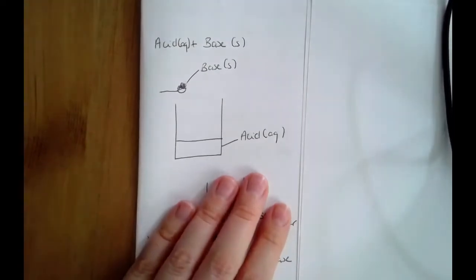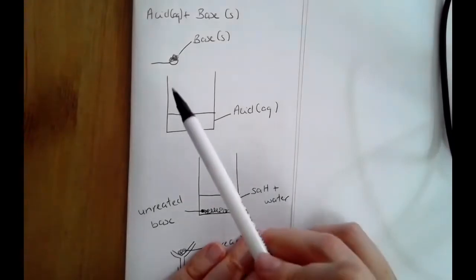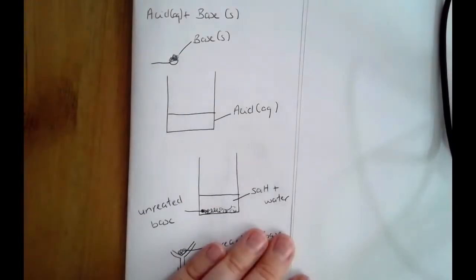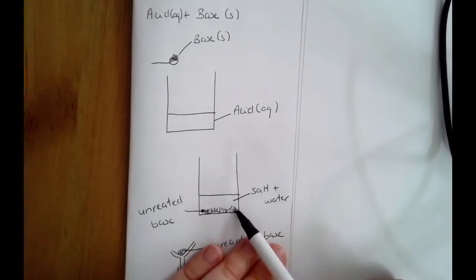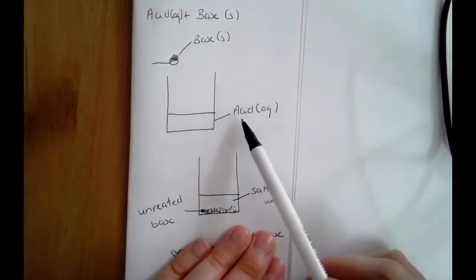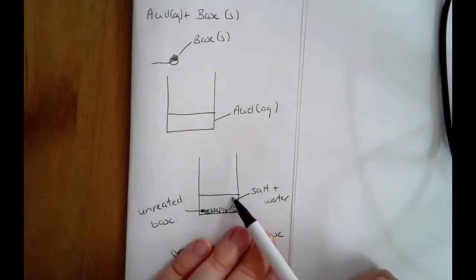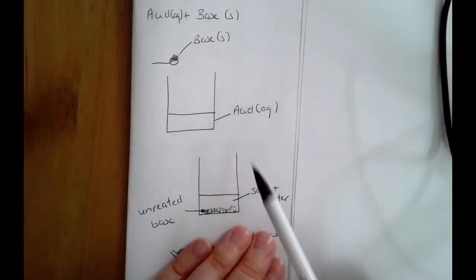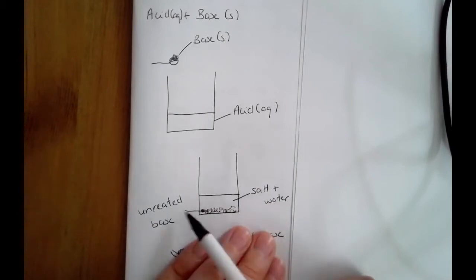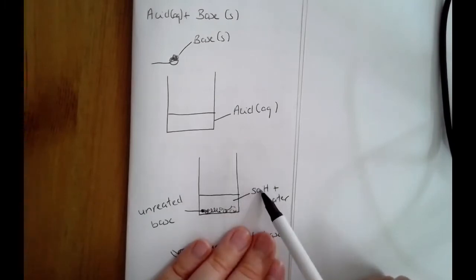How do you know when all of the acid has reacted? When all of the acid is gone, the base has nothing to react with and will stay solid. Remember, it doesn't dissolve in water, so without any acid to react with, that base remains solid — that tells you that you've added enough. At that point, you have salt, water, and some leftover solid base at the bottom of the beaker.